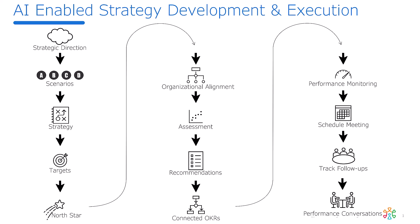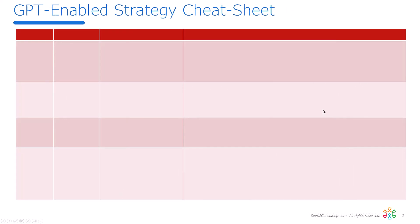In order to make this work, one of the key things you need to do is get the right inputs into GPT — garbage in, garbage out. So when we create the cheat sheets, what we're going to look at is: what's the stage we're doing from the previous chart, what are the issues you're trying to address in that stage, what are the inputs (this is critical — wrong inputs, wrong outputs), and then examples of the sorts of questions you can ask GPT.